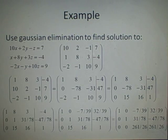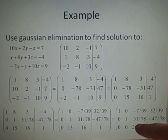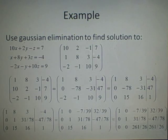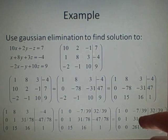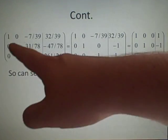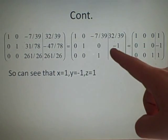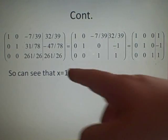The next job is going to be to make this value here, the 261 over 26, equal 1. So we're getting our identity. We always start with the 1 and we finish with the 0s on the columns. So if we multiply by 26 and divide by 261, that'll give us 1 here. And it'll also give us 1 here, because we're doing exactly the same, because it's the same number.